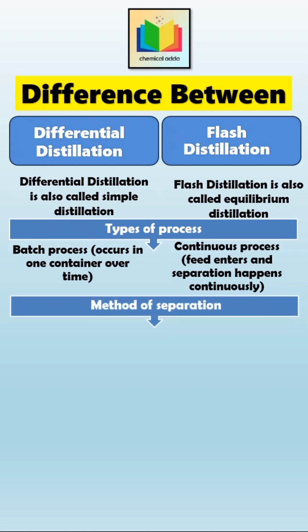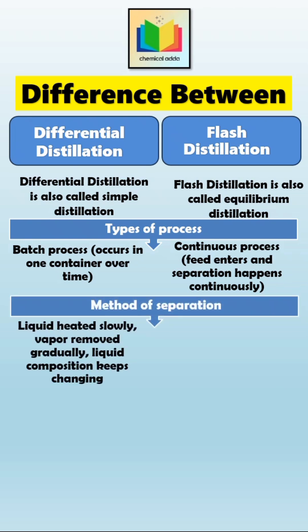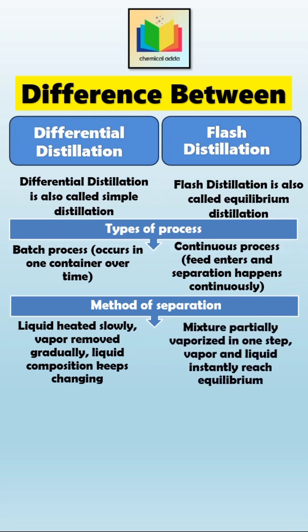The next point is the method of separation. In differential distillation, the liquid is heated slowly and vapor is continuously removed, so the composition of the liquid keeps changing as time passes. But in flash distillation, the mixture is partially vaporized in just one step, and the vapor and liquid phases separate instantly in equilibrium.